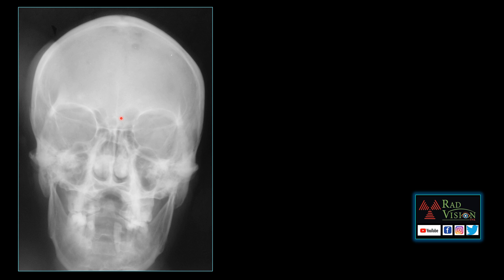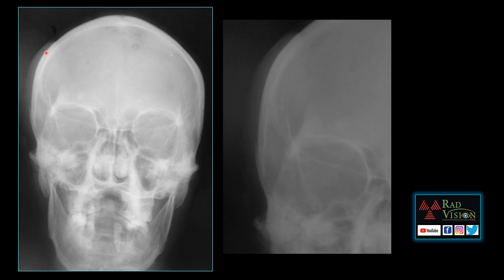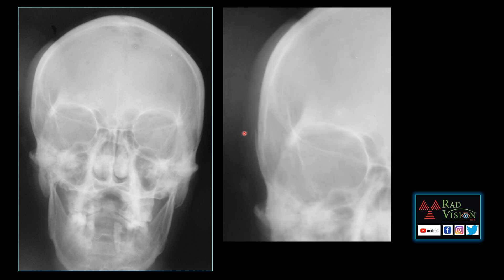Next case: this patient presented with trauma. You can see there is soft tissue swelling noted in the right frontotemporal region of scalp. When we look clearly, there is a subtle finding — a minimally displaced fracture in the right squamous part of temporal bone with absent soft tissue swelling. Fractures of the skull are easy to miss, so try to see carefully for fractures of skull bones. This is that minimally displaced fracture with absent soft tissue swelling.